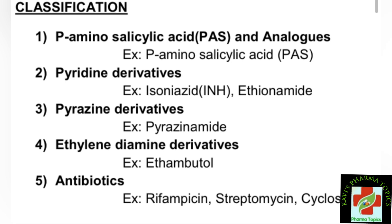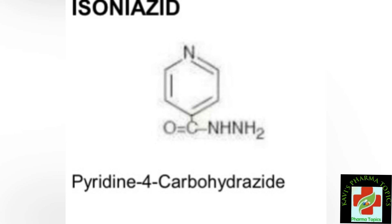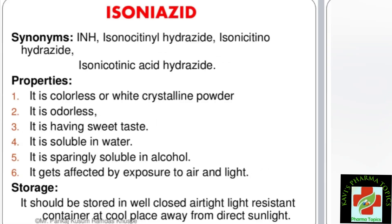Isoniazid structure — the IUPAC name is pyridin-4-carbohydrazide. The drug is also known as INH, isoniazid hydrazide, or isonicotinic acid hydrazide. Here we can see the isoniazid structure and its properties.